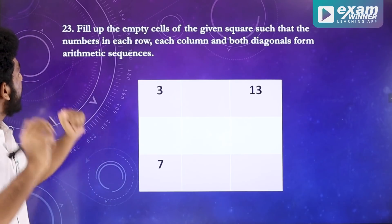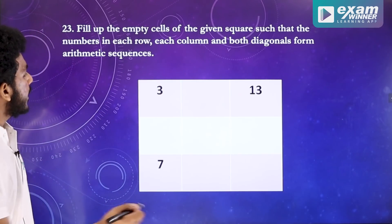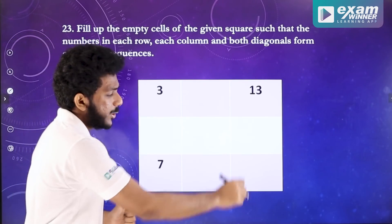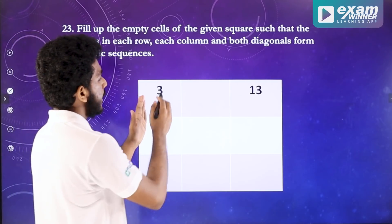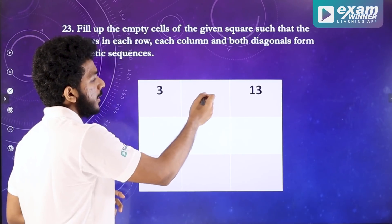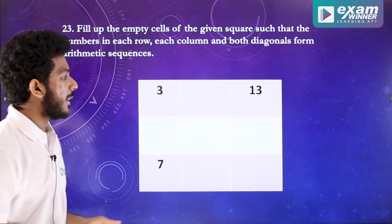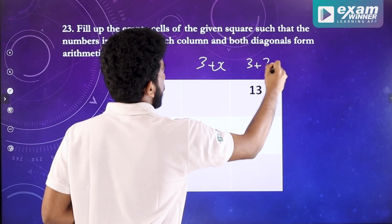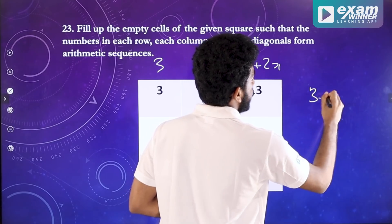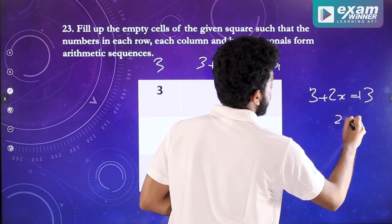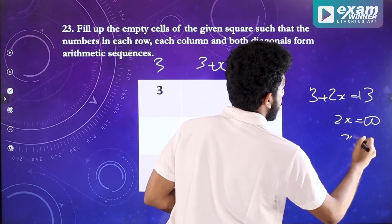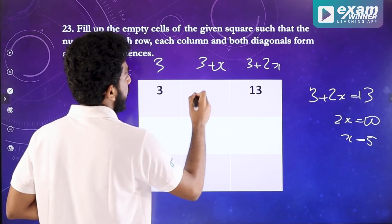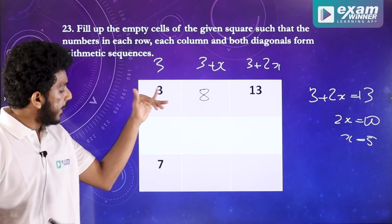This is a very interesting question — fill up the empty cells given in the square. What is the row in the arithmetic sequence? The column in the arithmetic sequence? We have A1=3 and A3=13. Then 3 plus 2x equals 13, so 2x equals 10 and x equals 5. The common difference is 5, and 3 plus 5 is 8.